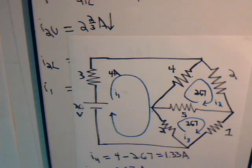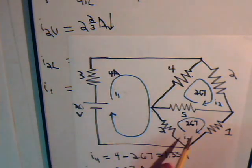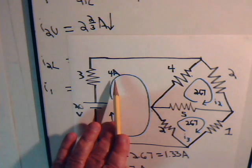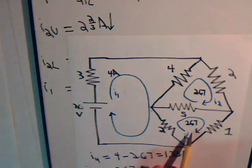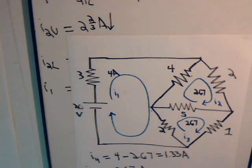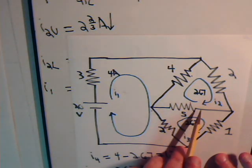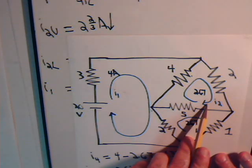This is from problem video number 17, where we encountered this bridge circuit and solved it with mesh current analysis. We found that for the three mesh currents I1, I2, and I3: mesh current I1 had a value of 4 amps, and I2 and I3 were 2.67 amps each. The first thing we notice is that the current through the 5 ohm resistor would be zero.